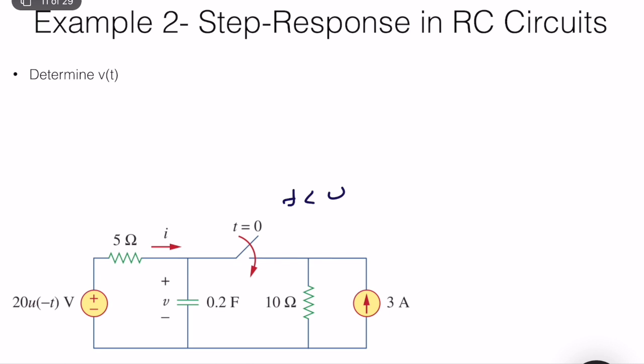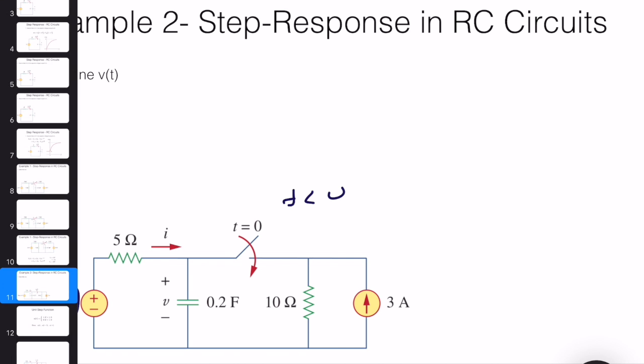We close the switch at time equal to 0. We have a functional form for the voltage source, which is 20 times u of minus t. This is called a step function.